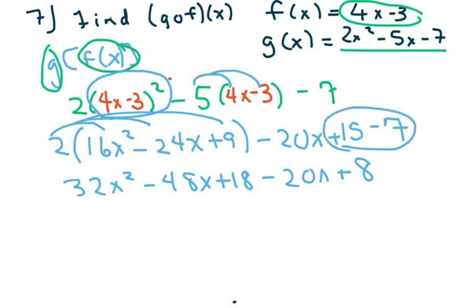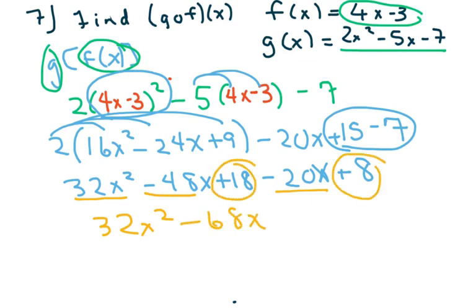I'll go ahead and clear this part up. That's an x. And then just clean it up. We only have the 32x squared. And then I want to put these two together. So that's minus 68x. And then these two is 26.